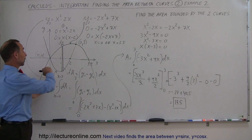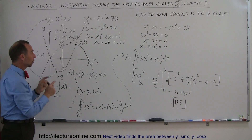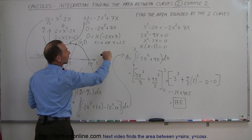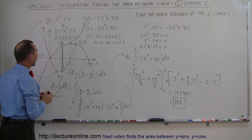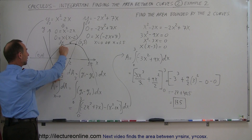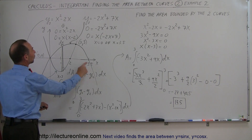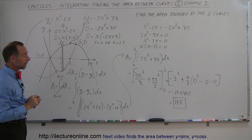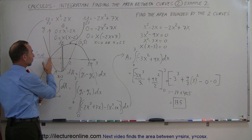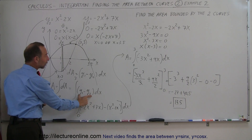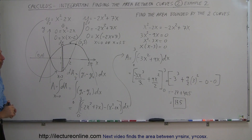Quick review: you have two curves, first graph them — a parabola opening upward and one opening downward. Solve the two equations simultaneously to find where they cross: x equals 0 and x equals 3. Set up a small area element as height times width, where height is y1 minus y2 (upper curve minus lower curve) and width is dx. Integrate from 0 to 3, replace y1 and y2 with their expressions in x, simplify, integrate, and plug in the limits. That's how you find the area between two functions.